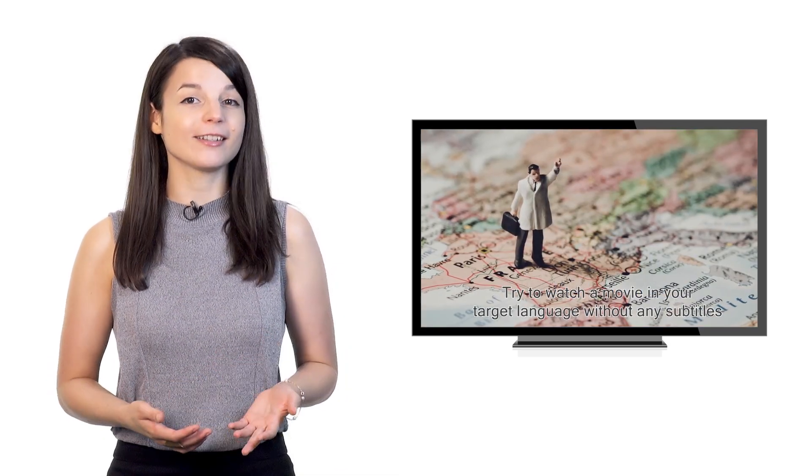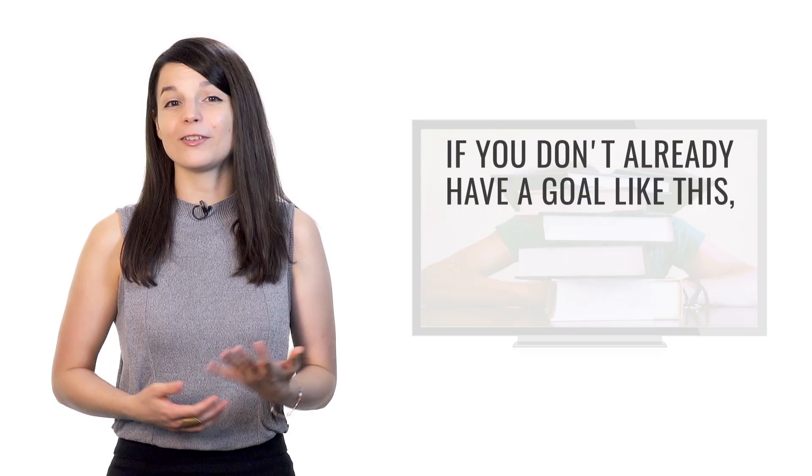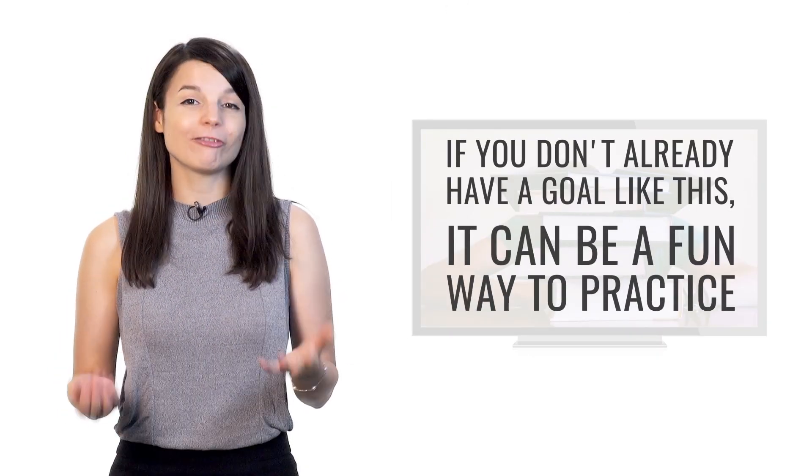The third tip is to focus on understanding a specific TV show or movie. Try to watch a movie in your target language without any subtitles. Or try to understand your favorite TV show that's in your target language. If you don't already have a goal like this, it can be a fun way to practice. If your friends often talk about a particular TV show, it could be a good way to study, and a fun way to keep your motivation up together. Plus, TV shows and movies often use the language in a way that's vastly different from the conversations provided in traditional textbooks, so you often get to hear different vocabulary choices. It's a very powerful way to learn a language and end up sounding more like a native speaker.